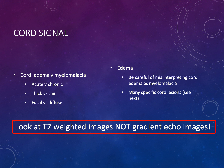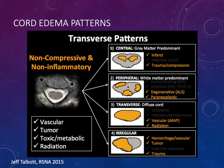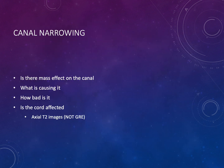When you have cord edema, assess it on T2-weighted images — do not assess cord edema on gradient echo images. There are standard edema patterns on axial images that indicate different causes, though the details of those patterns are beyond the scope of this talk. When you see cord edema, look at the axial images and determine the pattern to identify the underlying cause.